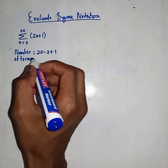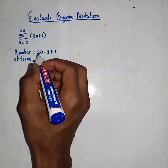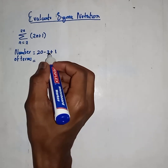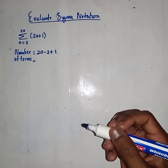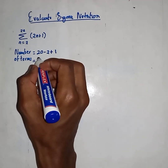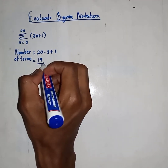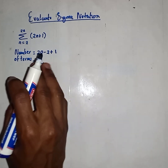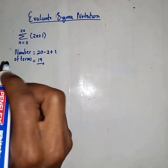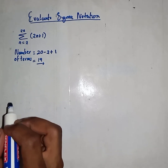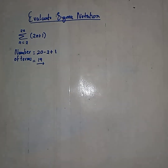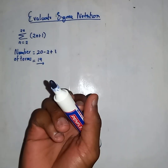Please don't forget to add that one. Then, 20 minus 2 gives you 18, plus 1, you get 19 terms. Immediately after doing this, we can then establish our series by finding out, let's say, three terms.